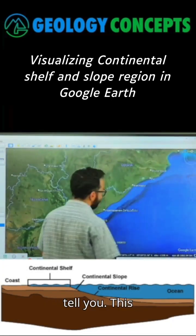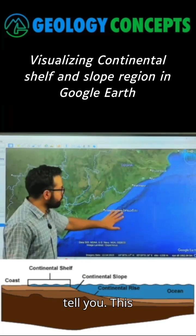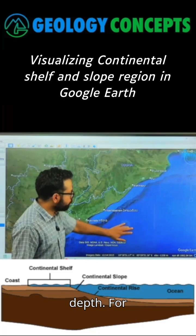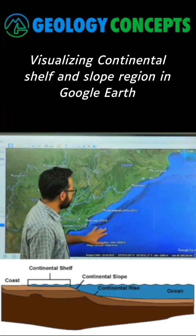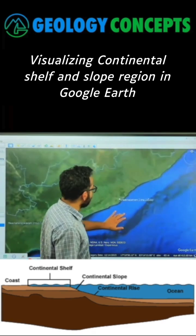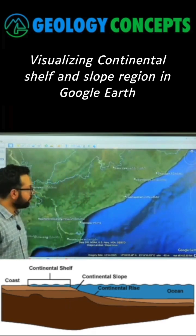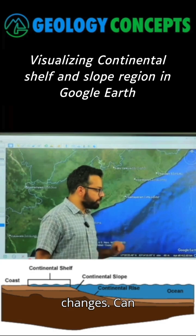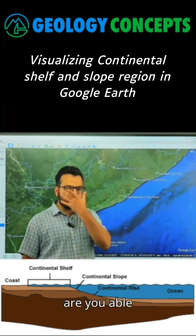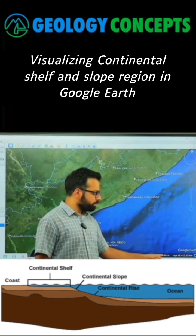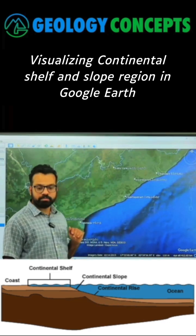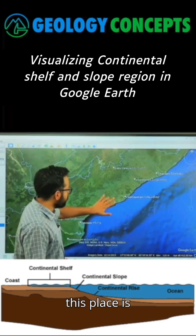One more thing I want to tell you — this is actually also telling you about the depth. For example, if you come over here, can you see the elevation? For online people, are you able to see this? Yes, sir. So, this is land. What is the elevation? 160. Because this place is on land.